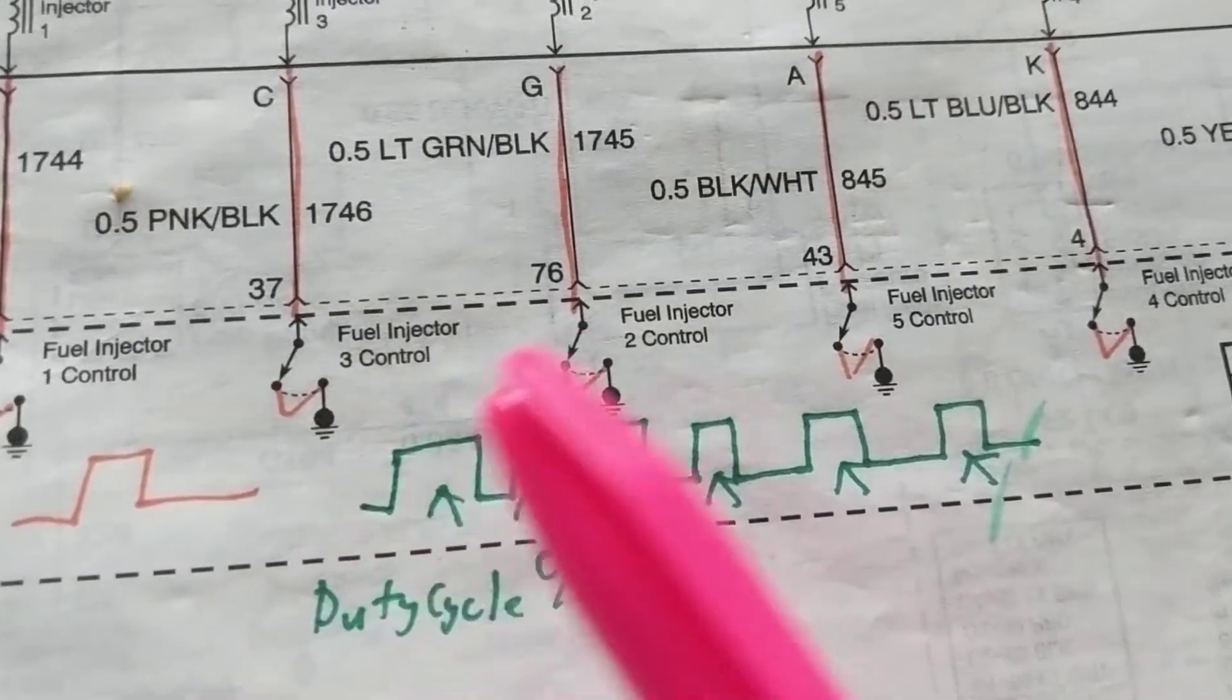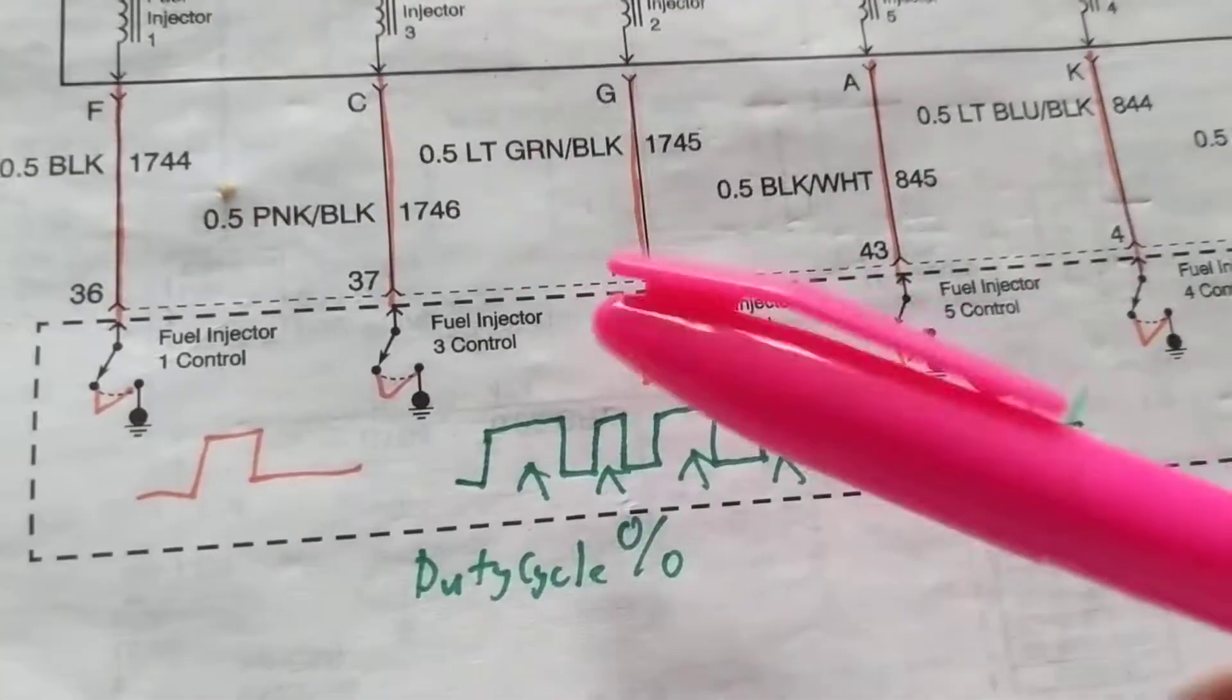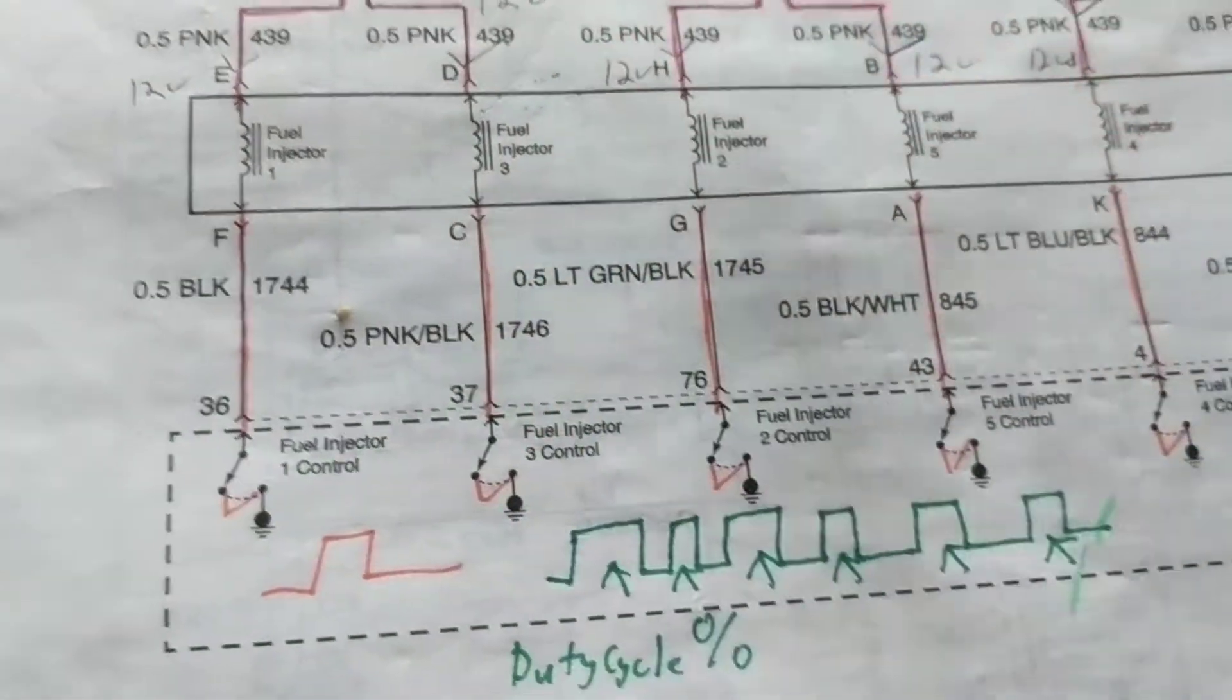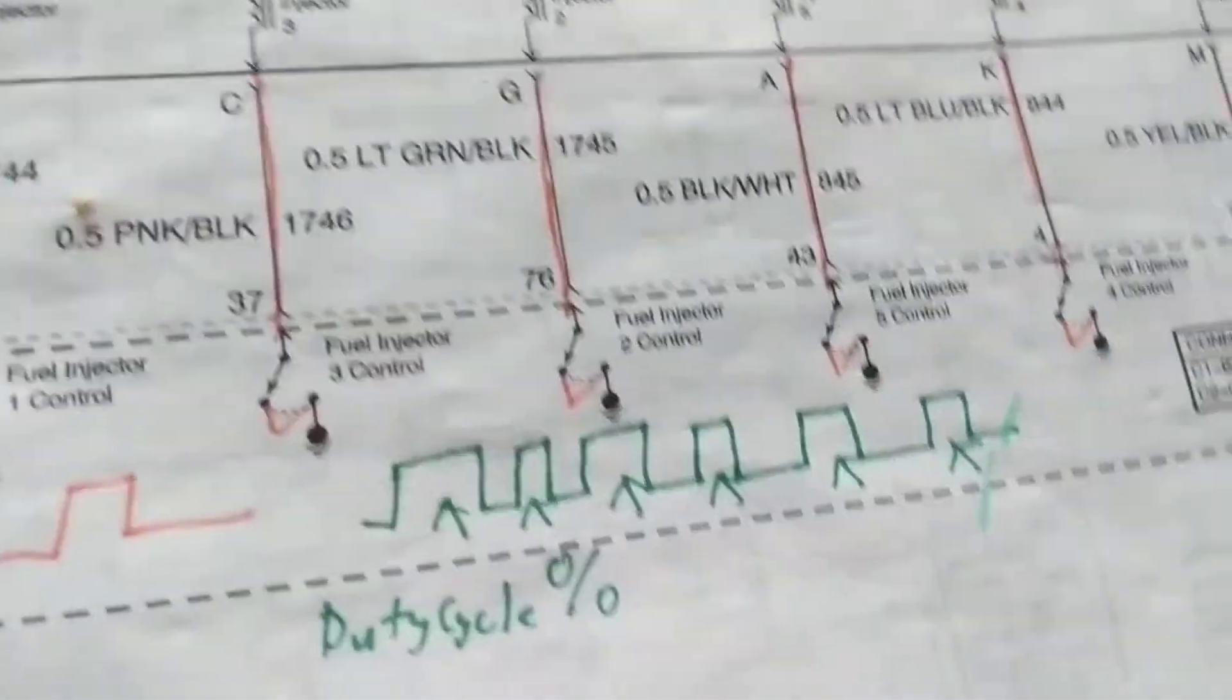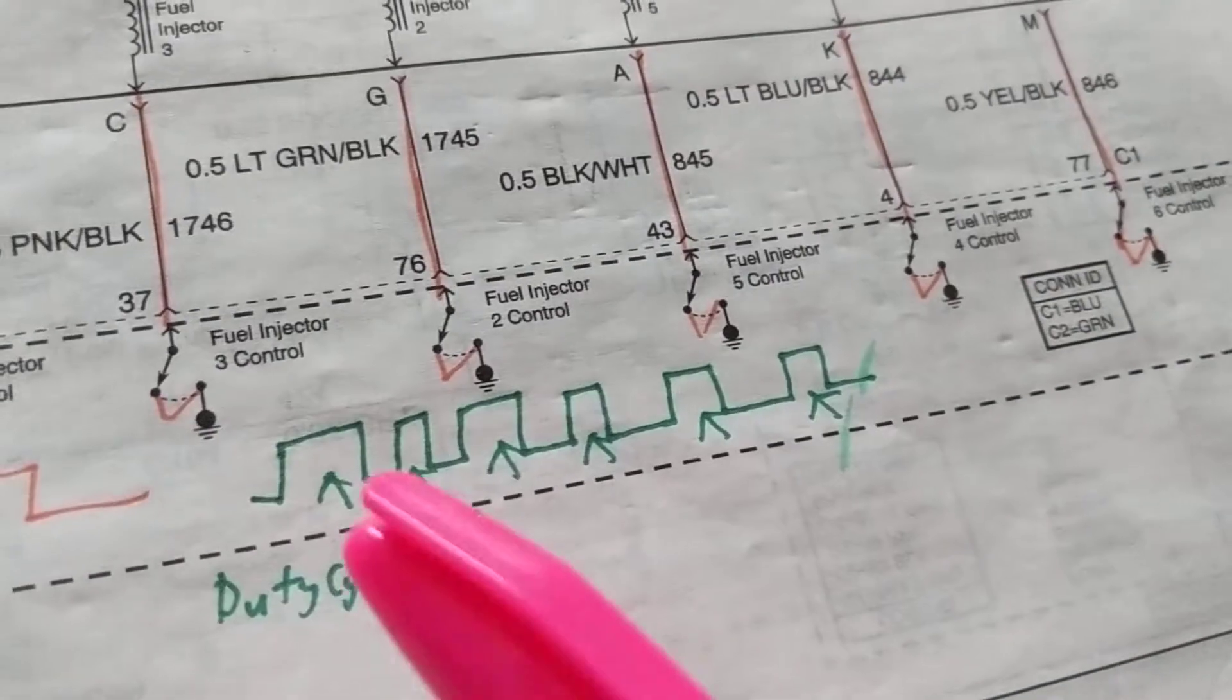These represent the on time, the off time, even though, actually, it's reversed, because this is a ground, not a positive. But still, I think you'll understand the concept I'm trying to convey.